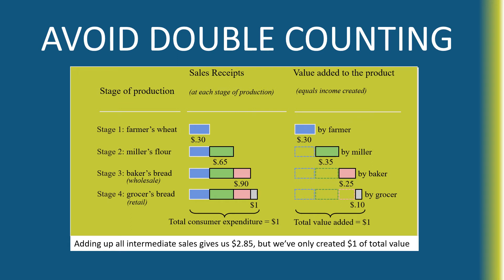We only want to count the value added so that if something is sold, we're not double counting. You can see that part of the miller's sale of the flour includes the farmer's wheat — the 30 cents of value the farmer added. So the miller only actually adds 35 additional cents to the value of this bread.